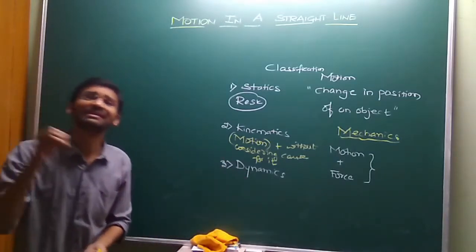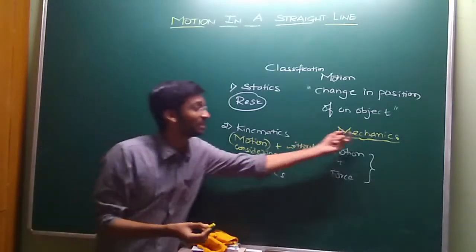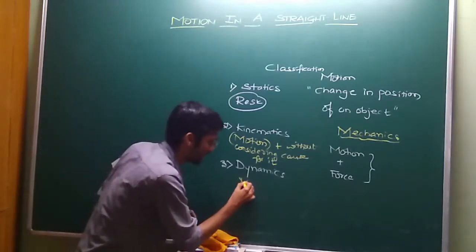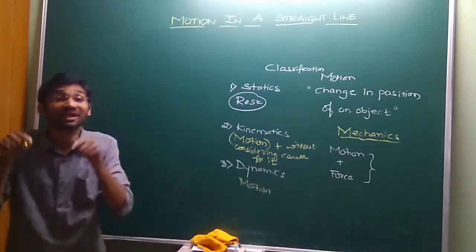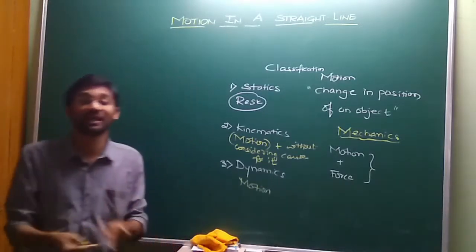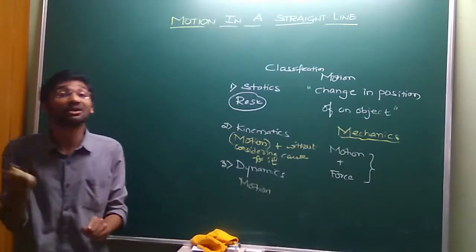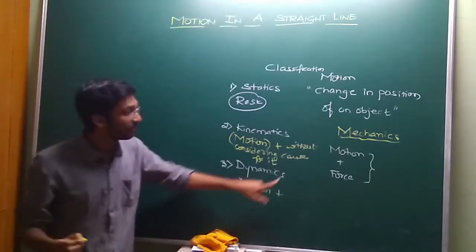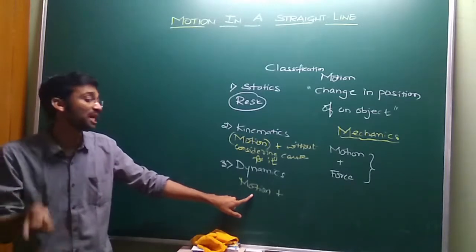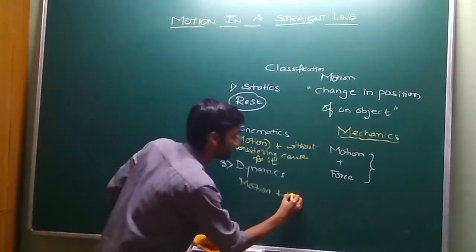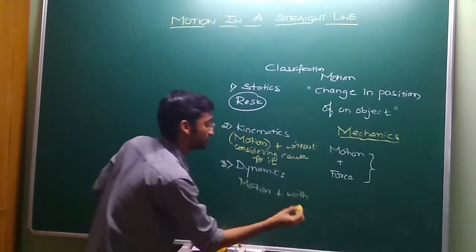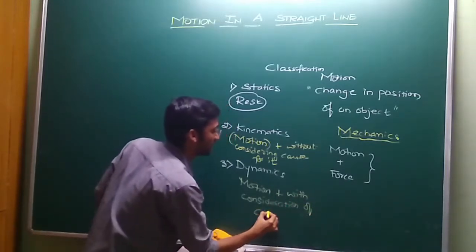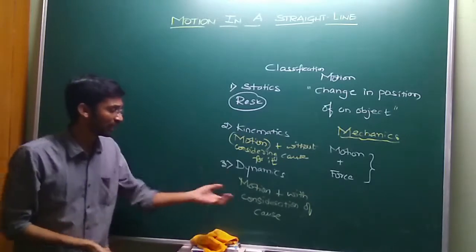The third branch is Dynamics. It is the branch of mechanics which deals with objects which are under motion — same as kinematics — but here we will consider the cause for it, such as the forces involved in circular motion.